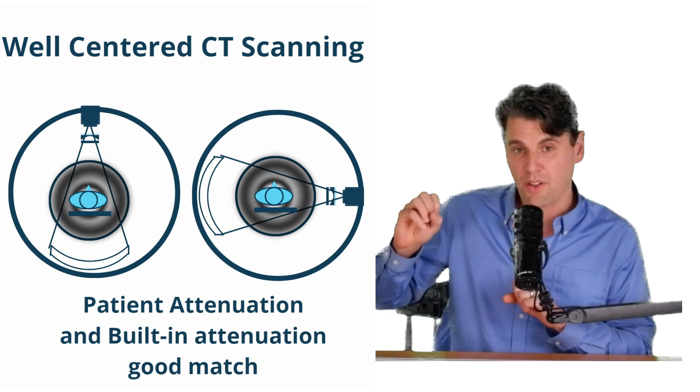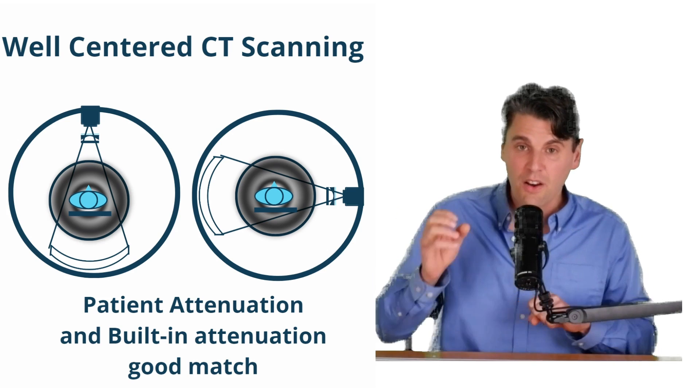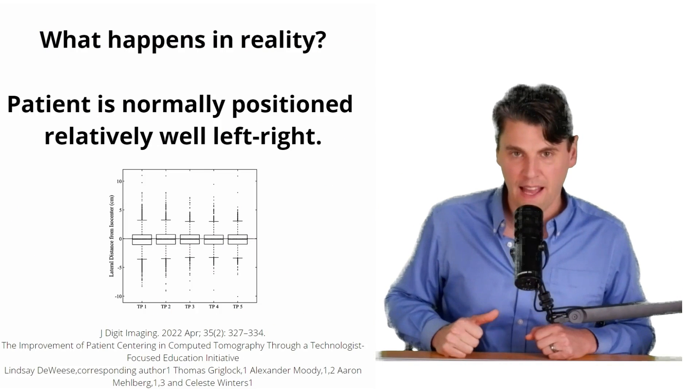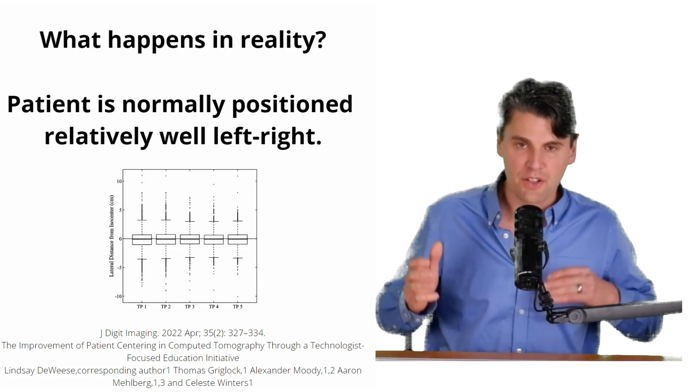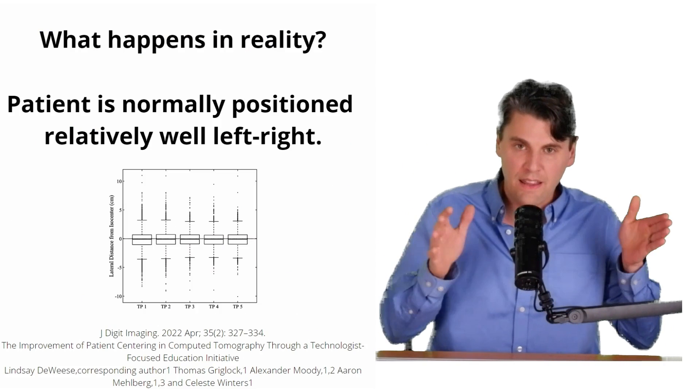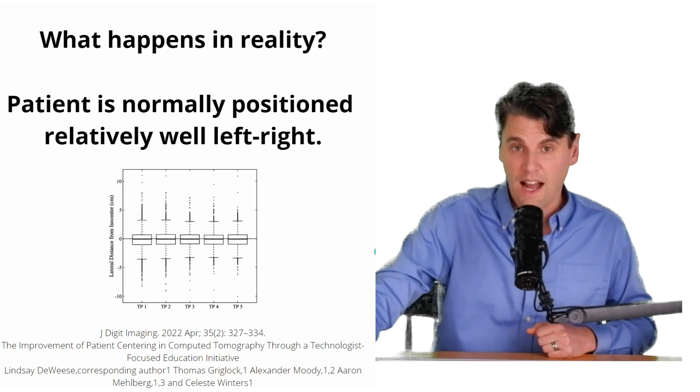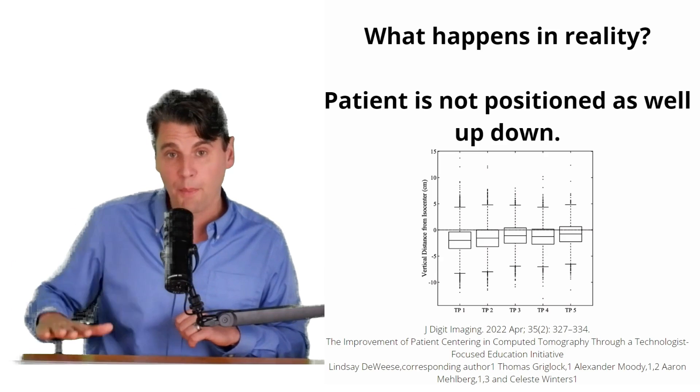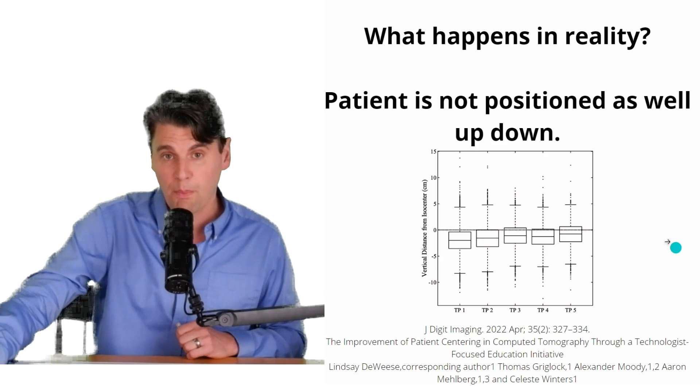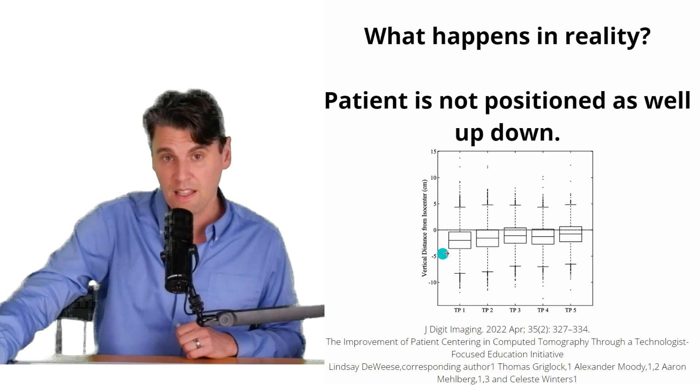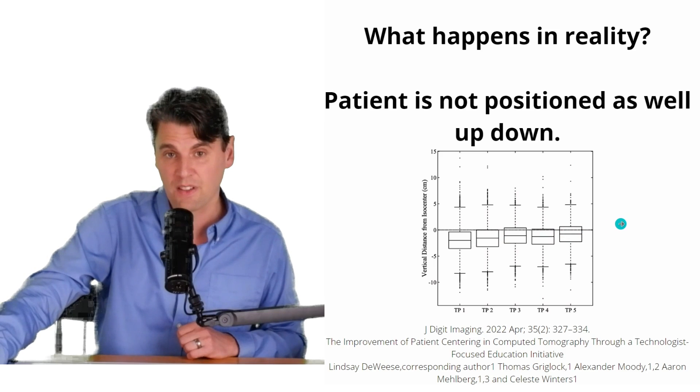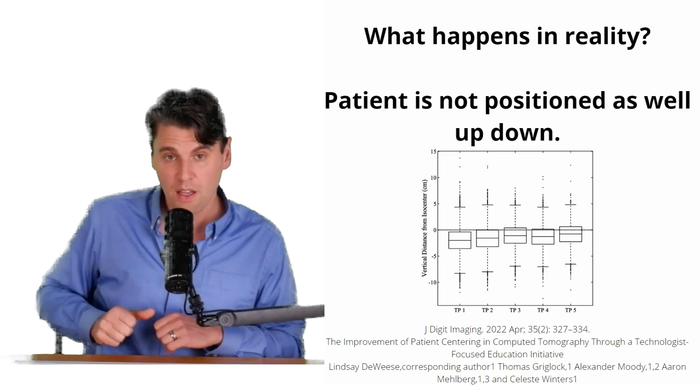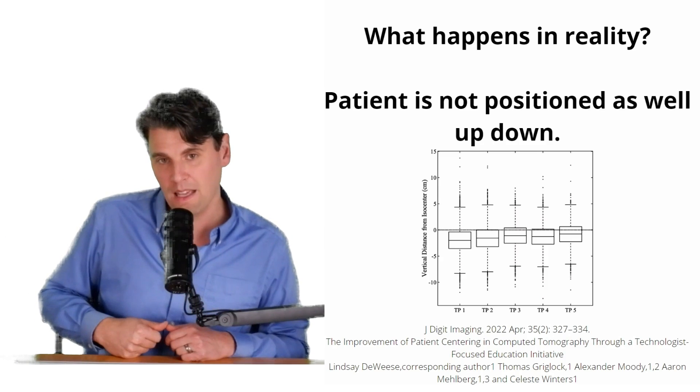But what actually happens in reality? In reality, at least on average, they're fairly well positioned in the left-right direction on the table. In addition to the variance, there's also more of a bias in the up-down direction. So more of the time, you can see the patients are usually being positioned too low in the scan field of view, such that they're not going to be optimally imaged.